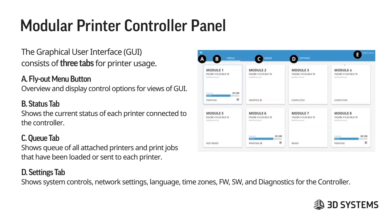On the settings tab there is a fly-out menu button on the top left, providing an overview and display control for options and views on your GUI. The status tab shows the current status of each printer connected to the controller. This particular controller has eight printers, called modules — module one through eight, each connected to this one controller. There is also a Q tab at C showing the queue of all print jobs loaded or completed, and a settings tab at D showing system controls, network settings, languages, firmware, software, diagnostics, and more.